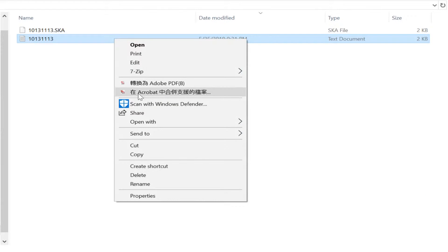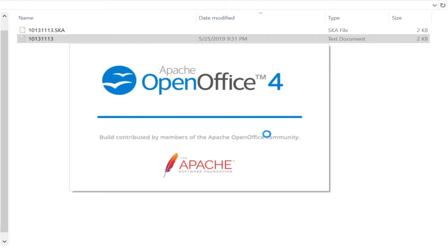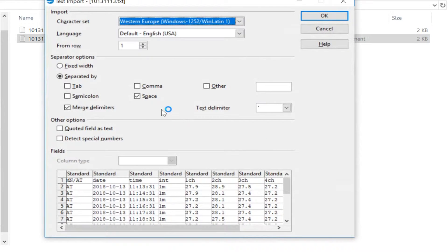The saved file is in text format. Windows Excel is one common method to open it. You may also use free software to open it, such as OpenOffice. Select Space and Merge delimiters as the criteria to separate the data into several columns.